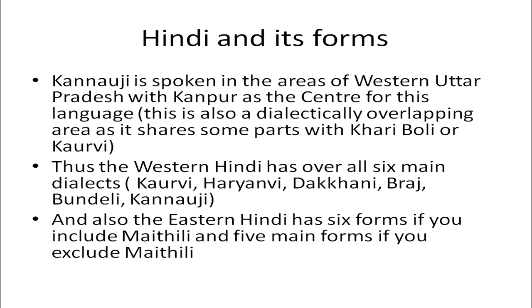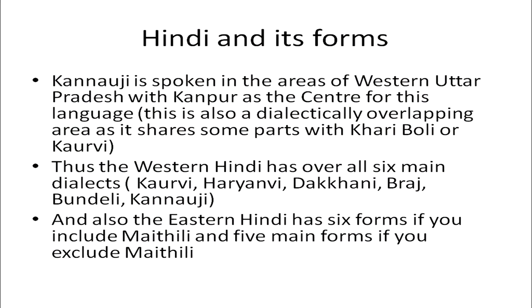Kannauji is the next form, spoken mainly in the district of Kannaj in western Uttar Pradesh with Kanpur as the centre for this language. This is also a dialectically overlapping area as it shares some parts with Khariboli and also with Kaurvi. From Kanpur onwards till Meerut, in Aligarh and all those areas, you will find a language which overlaps Kaurvi, Khariboli, and Kannauji. Thus Western Hindi has overall six main dialects: Kaurivi, Haryanavi, Dakhani, Braj, Bundeli, and Kannauji. Eastern Hindi also has six forms if you include Maithali, and five if you exclude it.